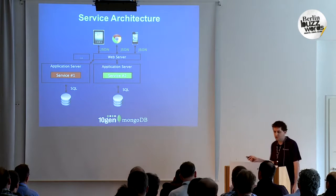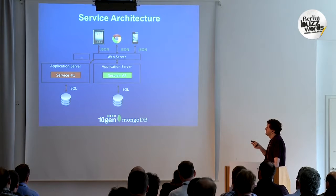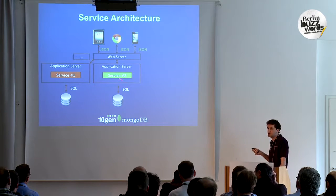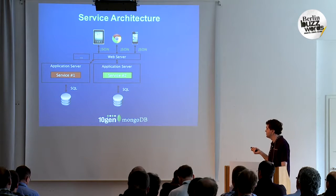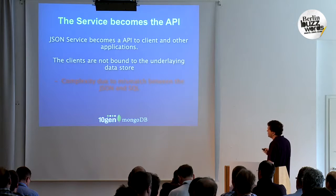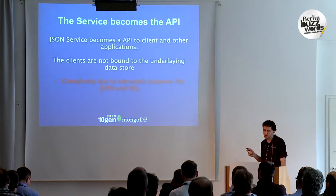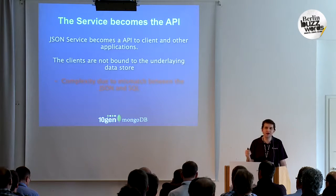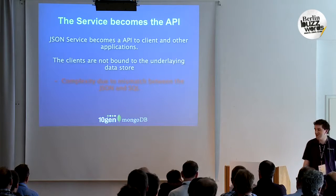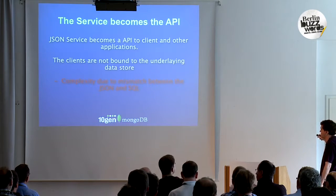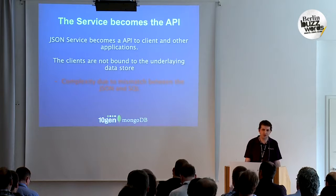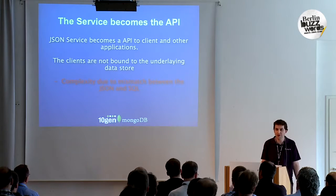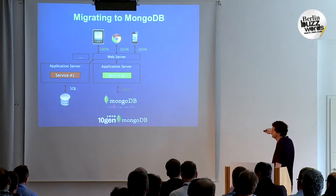We still have a problem: we have JSON at the top, but a fair amount of logic in the service is basically converting JSON to SQL. You've got a mismatch — JSON services trying to convert to SQL. Wouldn't it be nice if I could have JSON at the front end, do a little manipulation, validation, and business logic in my service, and then store JSON on the back end? The same model all the way through.